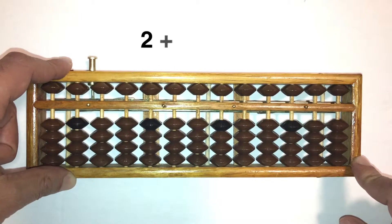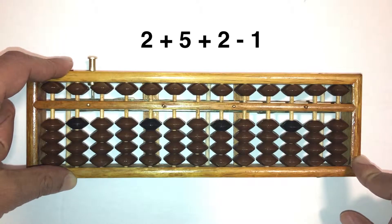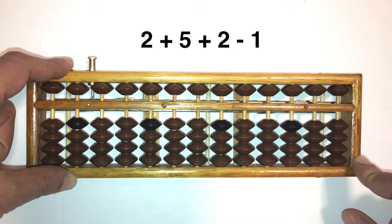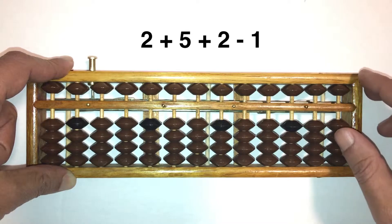Let's do 2 plus 5 plus 2 minus 1. Now you may already have done this in your head, but let's solve this on the abacus to understand how we count upper beads and lower together.